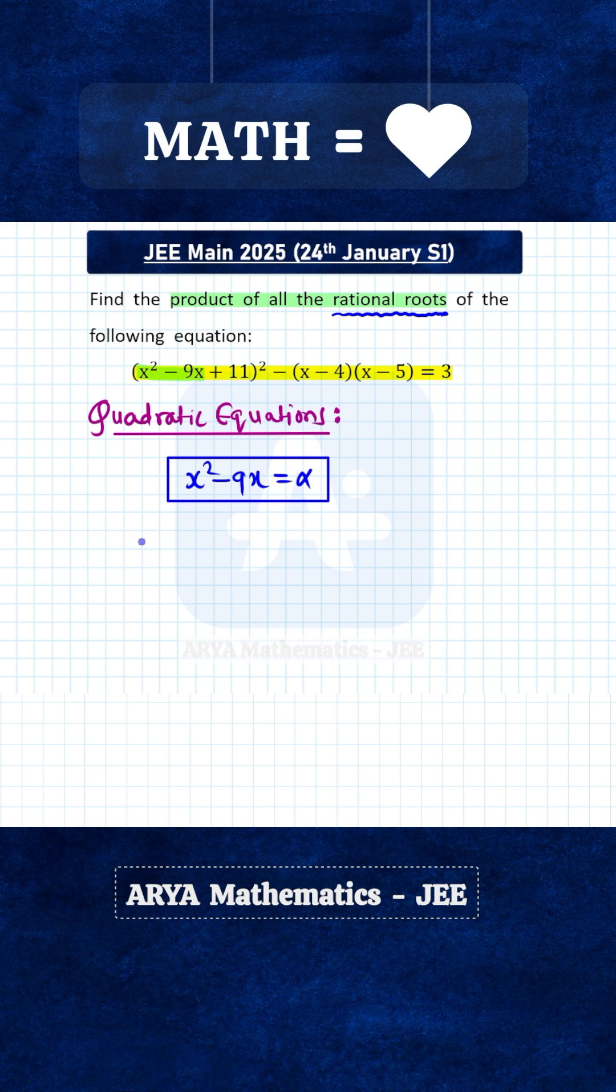If we replace x square minus 9x with alpha, then the given equation will be alpha plus 11 square minus alpha plus 20, this equals to 3. And after simplifying, you will get alpha square plus 21 alpha plus 98 equals to 0.